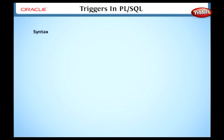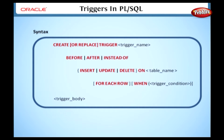Here is the syntax for creating a trigger. In this syntax, CREATE OR REPLACE TRIGGER is the keyword for writing a trigger. CREATE specifies the creation of a new trigger, while REPLACE specifies that we are going to recreate a trigger that already exists. Trigger name specifies the name of the trigger.